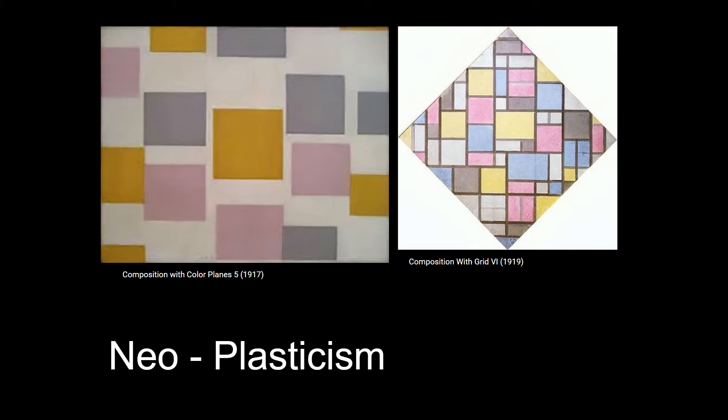Mondrian and his fellow Neoplastic artists thought that the merging of painting, architecture, and design would hasten the coming of an ordered and harmonious society. They intended that this utopian vision — coming from the dynamic equilibrium sought in Neoplastic paintings — would spread to the interior of the studio, to the home, the street, the city, and eventually the world. So this whole theory of creating Neoplasticism with fine lines and basic shapes was meant to create a whole utopian society based on these principles.